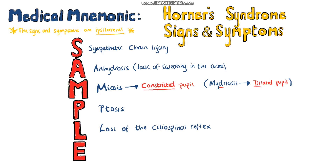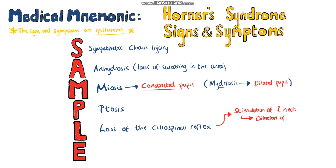L is for the loss of the ciliospinal reflex, where the ipsilateral pupil will dilate when pain is experienced on that side of the face or neck. For example, experiencing pain on the right side of the neck should lead to pupil dilation on the right side, which won't happen when the patient has Horner's syndrome. You can test this out yourself with a mirror and by rubbing the back side of your neck and watching for a response.